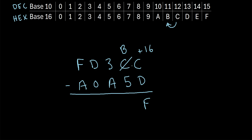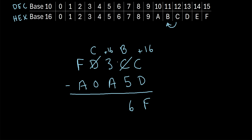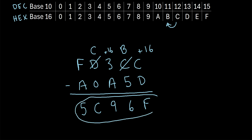Moving on to the next column, we have B minus 5. B is the same thing as 11, so this is 11 minus 5, which is 6. Next we have 3 minus A — A is the same as 10, so we can't do 3 minus 10. We borrow from the next column, so this D becomes a C, and we add 16 to this 3. So 3 plus 16 is 19, minus A — A is 10 — so 19 minus 10 is 9. Next we get C minus 0, that's just C. And lastly, F minus A: F is 15, A is 10, so 15 minus 10 is 5. Our final answer is 5C96F.